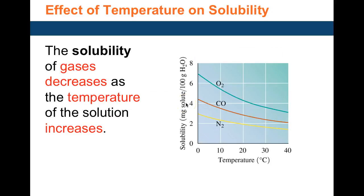This is different for gases: as temperature increases, the solubility of a gas decreases, as shown in the graph where all gas lines trend downward with increasing temperature. This has a real-world effect — on a hot day, lakes and freshwater sources have less dissolved oxygen, making it hard to sustain aquatic life. Fish and other sea life start dying during hot weather because there's less oxygen in the water to sustain them.